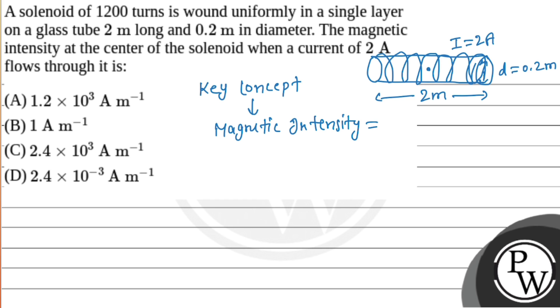Magnetic intensity H equals B over μ₀. The magnetic field B due to a solenoid at its center is μ₀ n I, where n is the number of turns per meter.